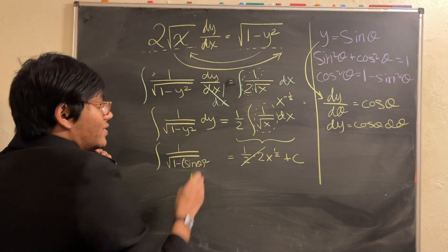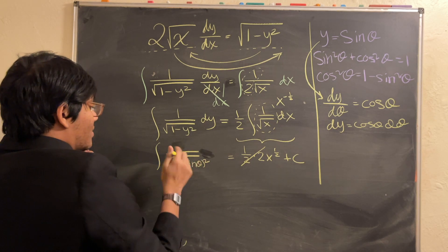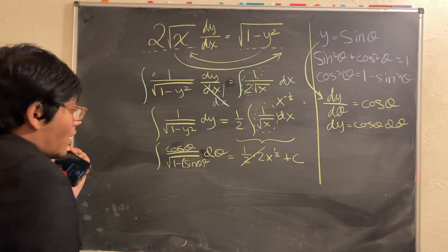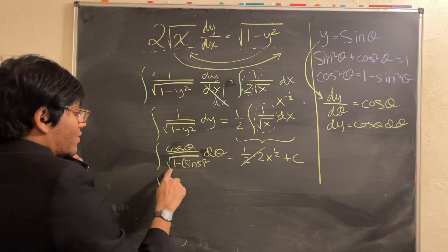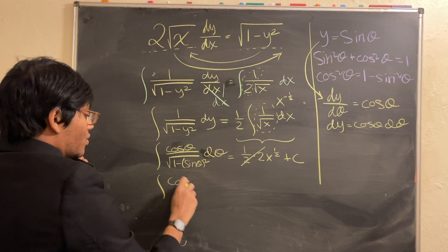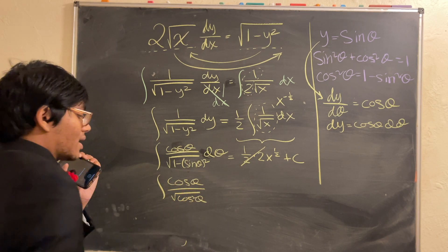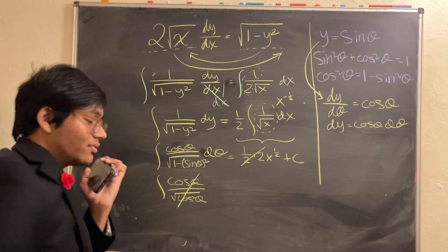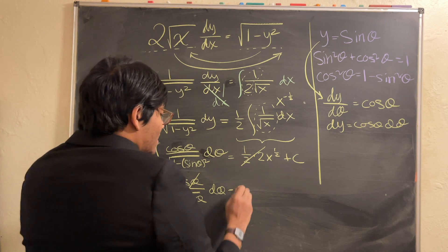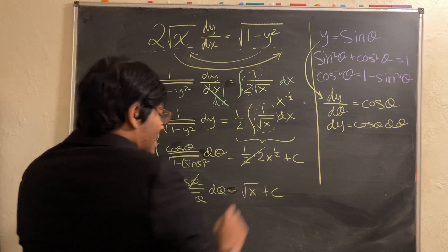And so, I can write here, instead of dy, I can write cosine theta. Let me write that on the top here, cosine theta d theta. Okay. So, on the bottom, I simplify down to cosine theta, right? 1 square root of 1 minus sine squared theta is what? That's going to be cosine theta on the top divided by square root of cosine squared theta on the bottom. These two guys cancel out, right? And so, I'm going to be left with just the integral of 1 d theta is equal to x to the half.